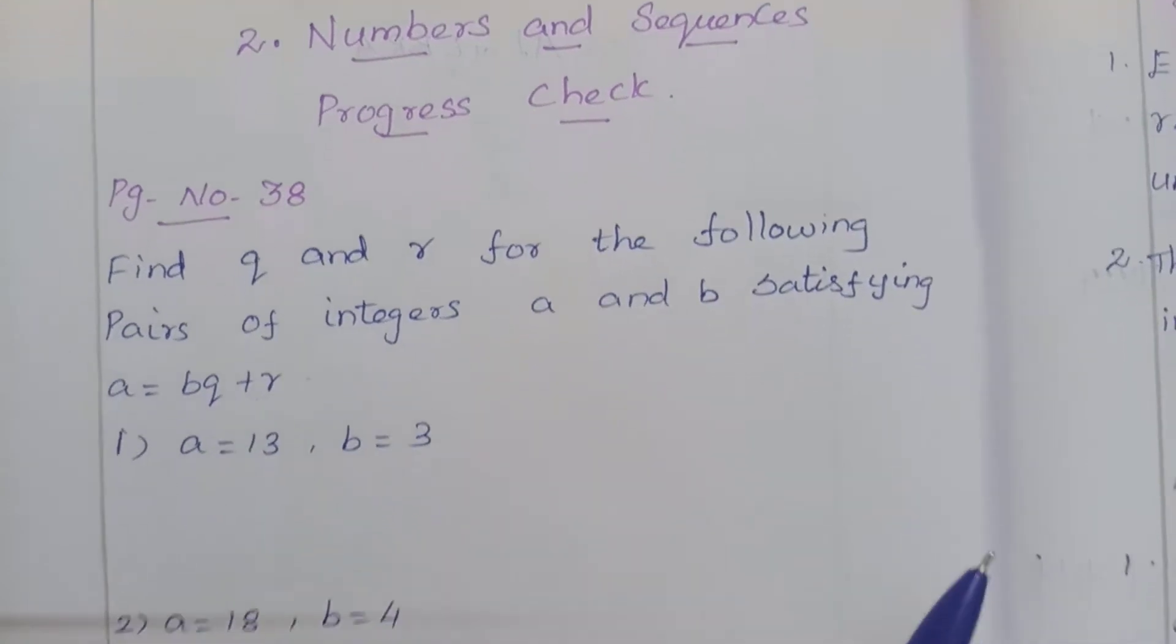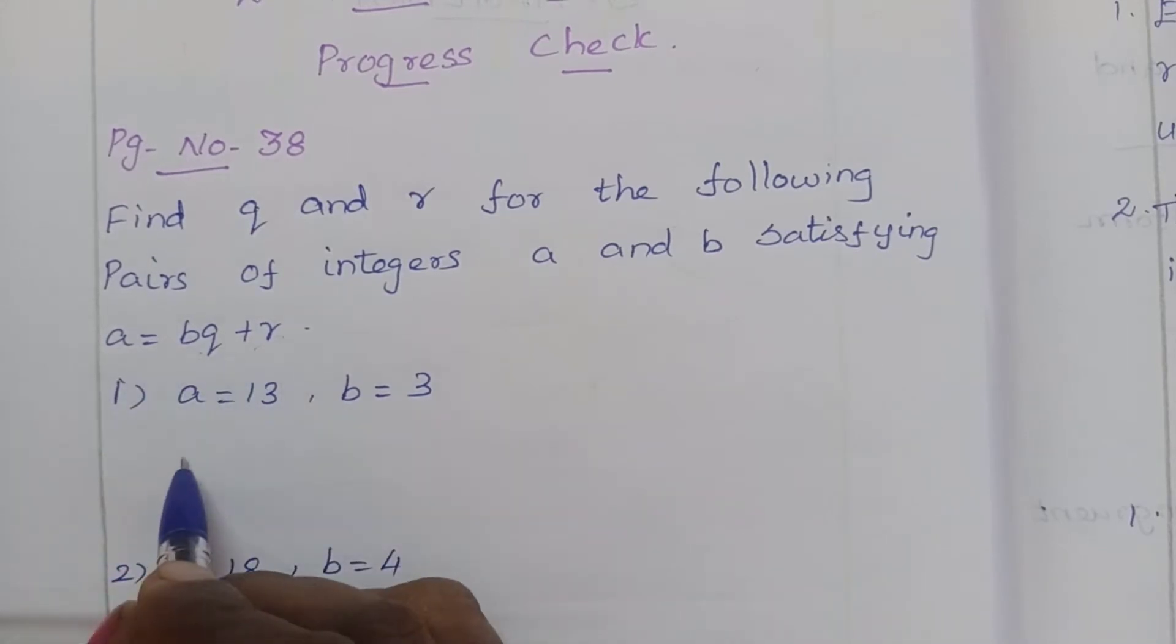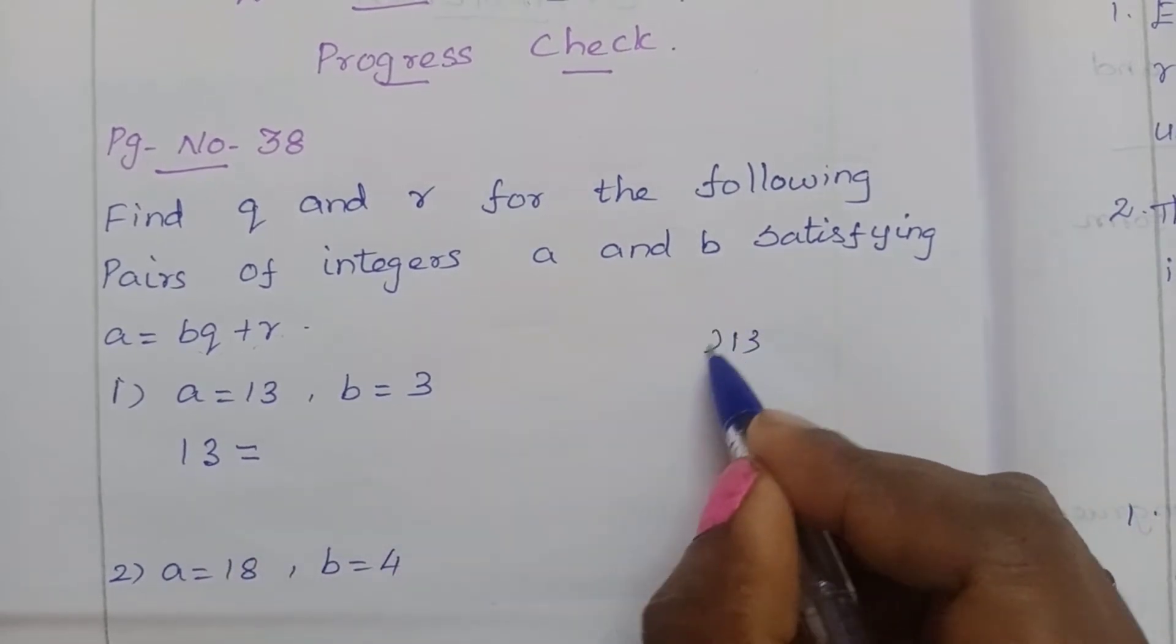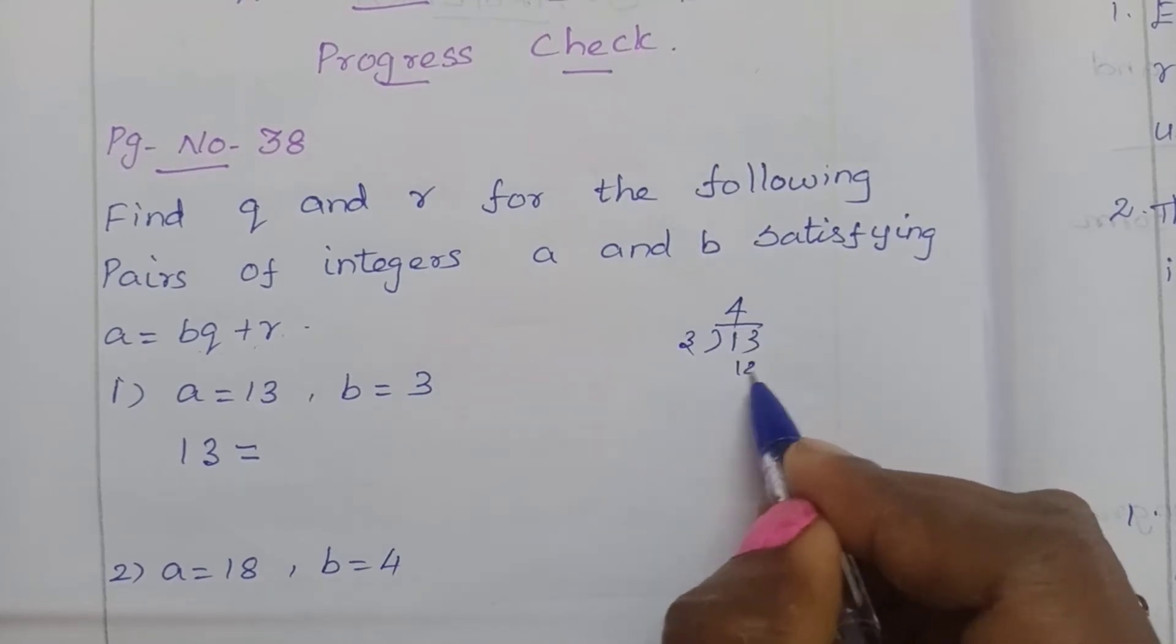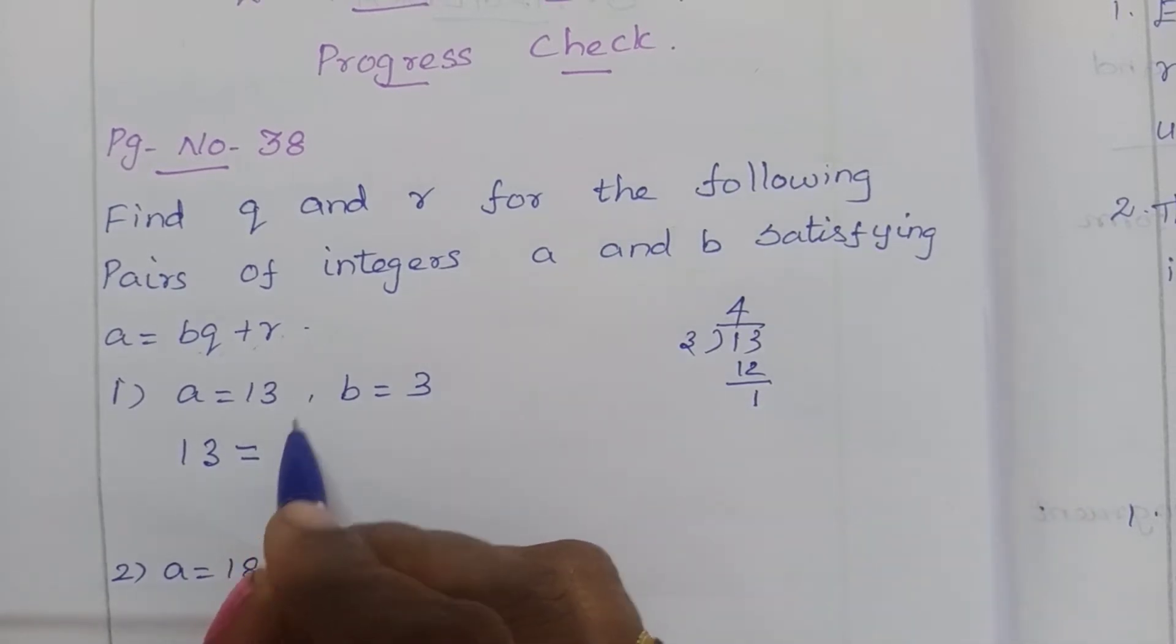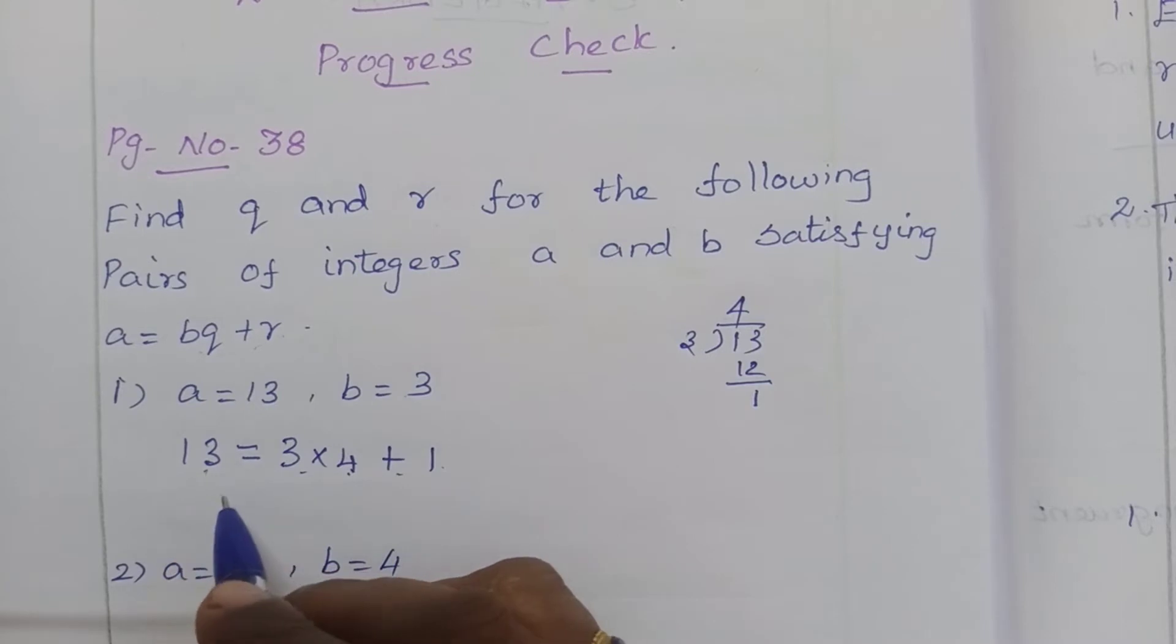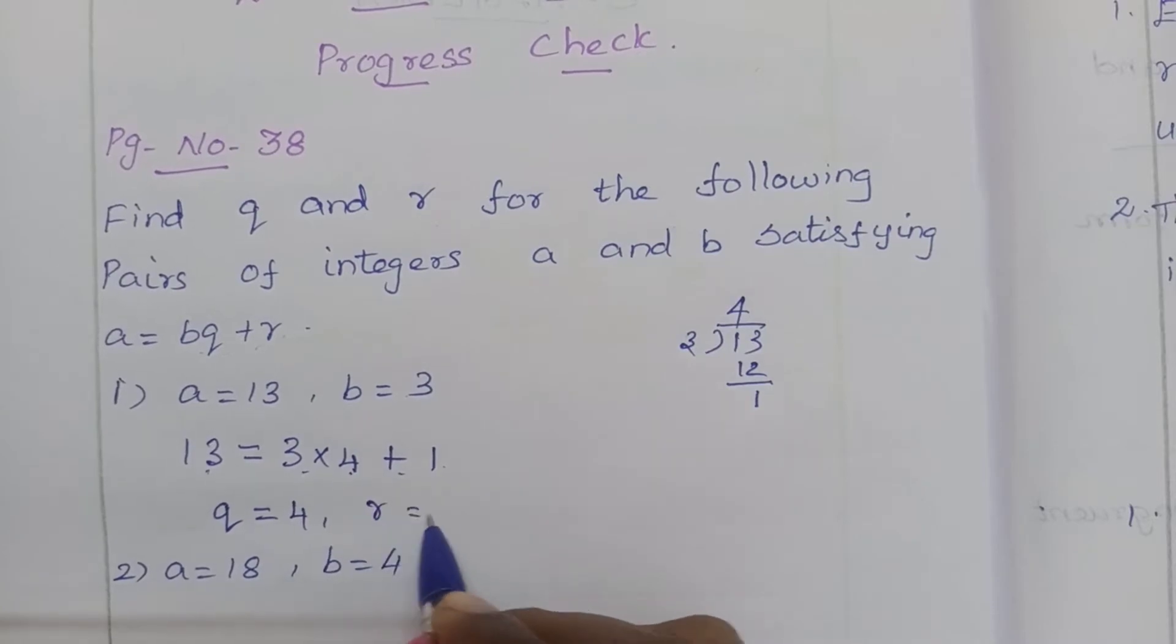First problem A equal to 13, B equal to 3. So substitute in here. 13 equal to, we are going to divide by 3. So 13 divided by 3, 4 3's are 12, reminder 1. So how can we write this: divisor is 3, so 3 into 4 plus 1, 3 4's are 12, 12 plus 1, 13. So therefore Q equal to 4, R equal to 1.